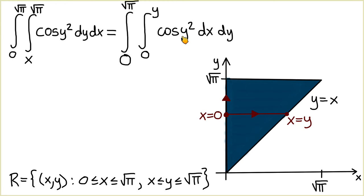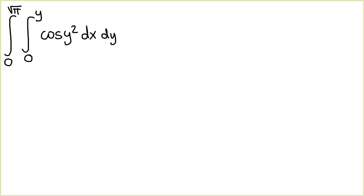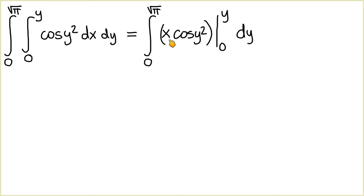Now that we have switched the order of integration we are ready to evaluate the integral. We begin by evaluating the inner integral with respect to x, and since we treat y as a constant, cosine of y squared is treated as a constant. Therefore when we integrate cosine of y squared with respect to x we obtain x cosine of y squared. Replacing x with y we obtain y cosine of y squared, and replacing x with 0 we have 0.